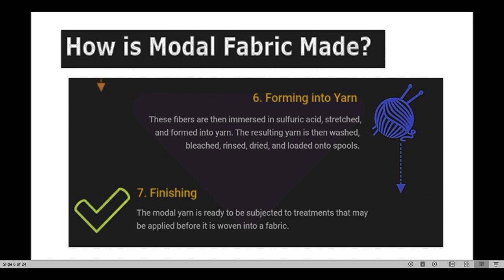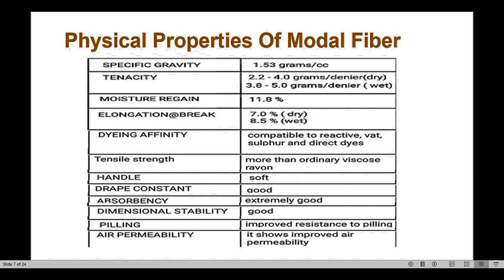Now we will study the physical properties of Modal fiber. Specific gravity is 1.53 g/cc. Tenacity is 2.2–2.4 g/denier for dry and 3.8–5.0 g/denier for wet — it becomes stronger when wet. Elongation at break is 7.0% dry and 8.5% wet. Moisture regain is 11.8%.